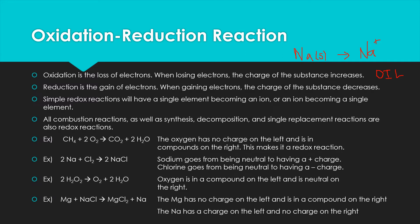Reduction is the gain of electrons. When gaining electrons, the charge of the substance decreases — it is literally reduced. For example, chlorine gas reacting to form chloride ions (Cl⁻) goes from neutral to a charge of minus one — its charge goes down, so it has gone through reduction. To remember this: oxidation is loss, reduction is gain — we use the acronym OIL RIG.